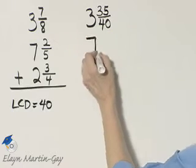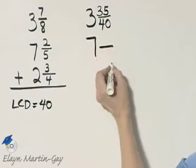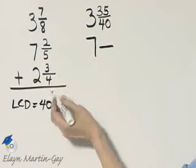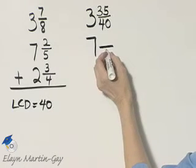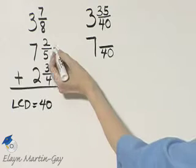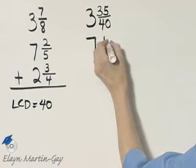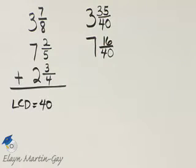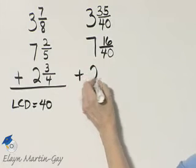Let's continue. 7, and now let's work on 2 fifths. 5 times what number gives me 40? Well, 5 times 8 is 40. Keep in mind that 8, because we now need to multiply 2 times 8, and we have 16.